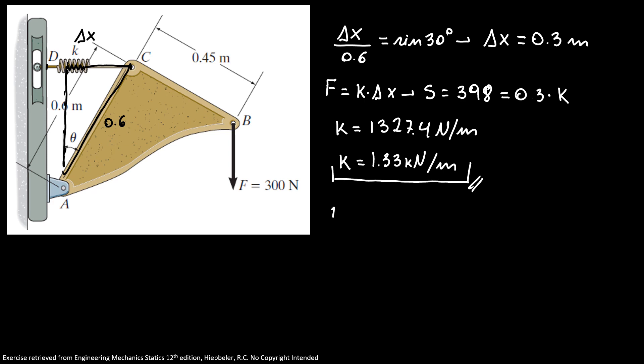From the sum of forces in x equals zero, I have Ax minus S equals zero. So my Ax, my horizontal component is 398 newtons.